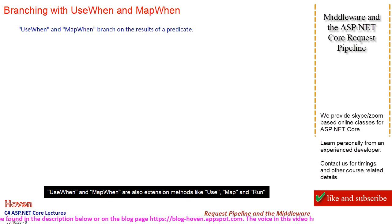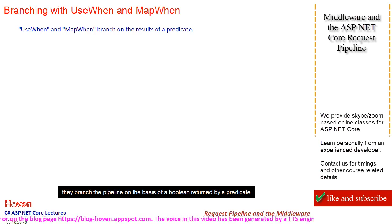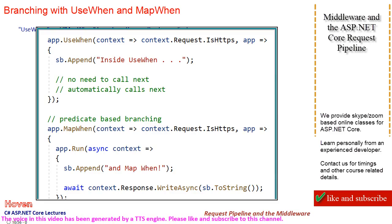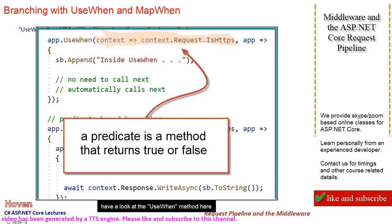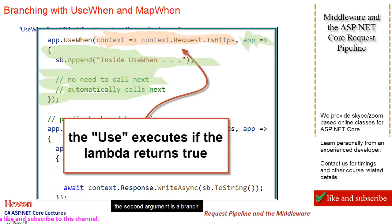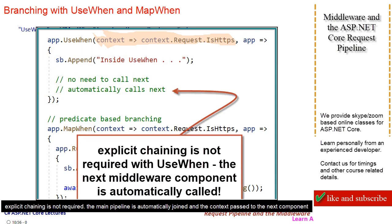UseWhen and MapWhen are also extension methods like Use, Map, and Run. They branch the pipeline on the basis of a boolean returned by a predicate. After execution, they rejoin the main pipeline — explicit chaining is not required. The UseWhen method consists of a predicate that returns a boolean value; the second argument is a branch that executes only if the predicate returns true. The main pipeline is automatically rejoined and the context passed to the next component. MapWhen also branches on the basis of a predicate.